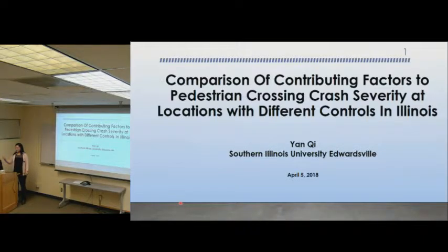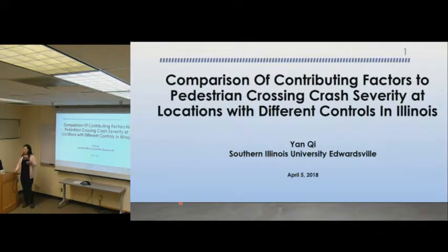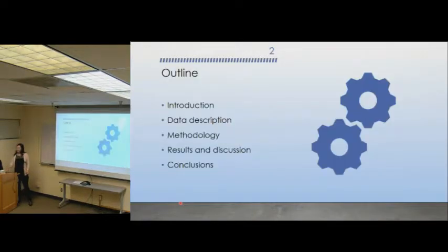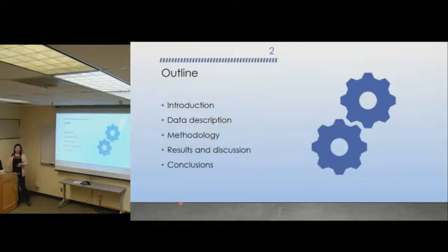The title for this presentation is Comparison of the Contributing Factors to Pedestrian Crossing and Crash Severity at Different Locations with Different Control Types. First, I will give some background information, then talk about the data we used, followed by the methodologies, the results and discussion, and finally the conclusions.